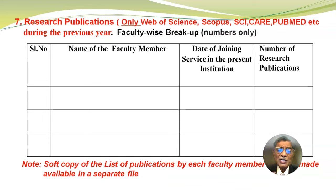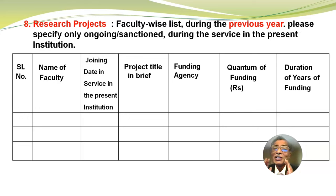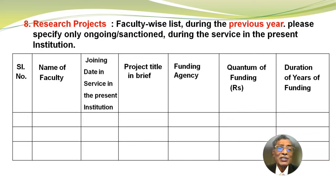Soft copy of the list of publications by each faculty member must be made available in a separate file. Then research projects — faculty-wise list during the previous year. Please specify only ongoing or sanctioned projects during the service in the present institution, in this format: serial number, name of the faculty, joining date in the present institution, project title in brief, funding agency, quantum of funding in rupees, and duration of funding in years.